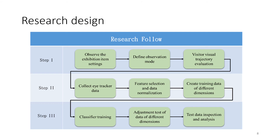In the research design, it is mainly divided into three steps. Stage 1 is to set the operation object to be selected. According to the exhibition objects of the science museum, visitors are provided with a visit design. A visit experiment is conducted for the content of the exhibits viewed by the visitors and the records.